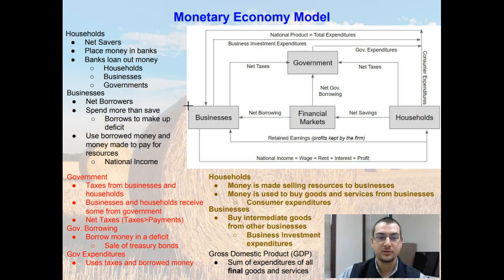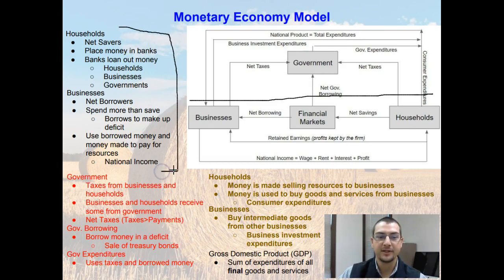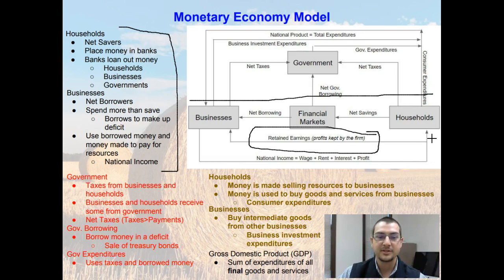That pretty much sums up the bottom half of this model. The only thing we don't talk about is retained earnings. Businesses may flow wage, rent, interest, and profit — all the money that they make — to the households, but businesses will actually keep some of the profits themselves. This is known as retained earnings. That's the reason for this backflow line here: yes, the majority of the money is going to the households, but some of it will backflow back into the businesses as retained earnings.